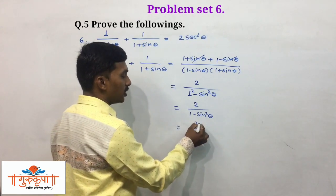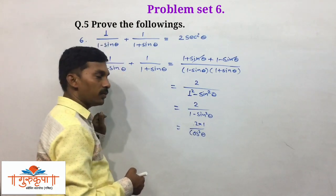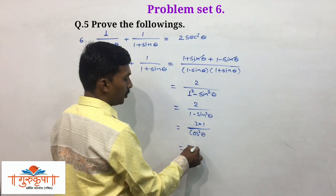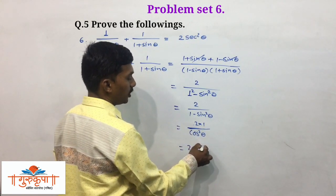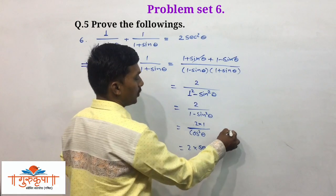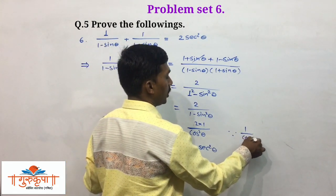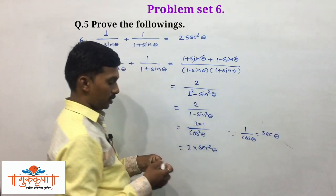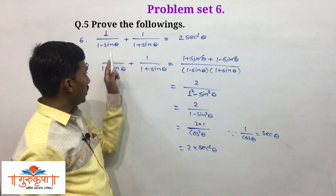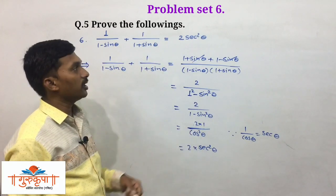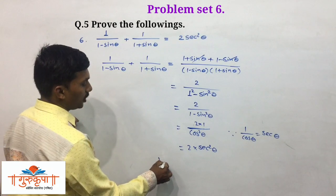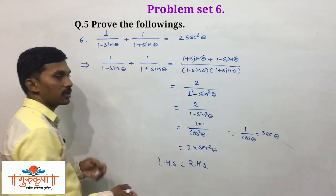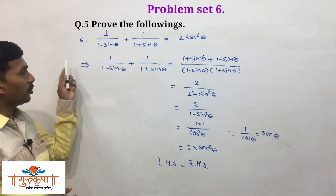We can write this as 2 upon (1 minus sin squared theta), which equals 2 upon cos squared theta. Now, 2 as it is multiplied by 1 upon cos squared theta — and 1 upon cos squared theta is sec squared theta. Using the identity 1 upon cos theta equals sec theta, we get 2 times sec squared theta, which is RHS. So LHS equals RHS. This is all about example number 6.